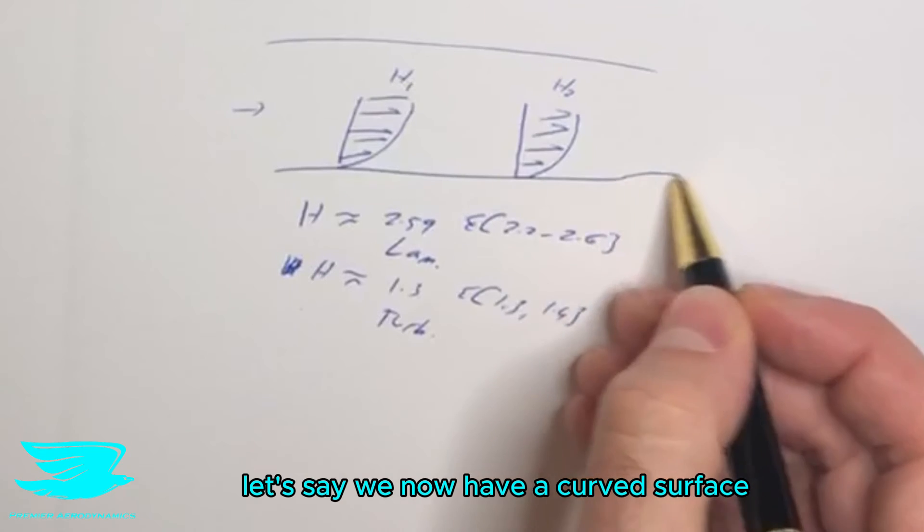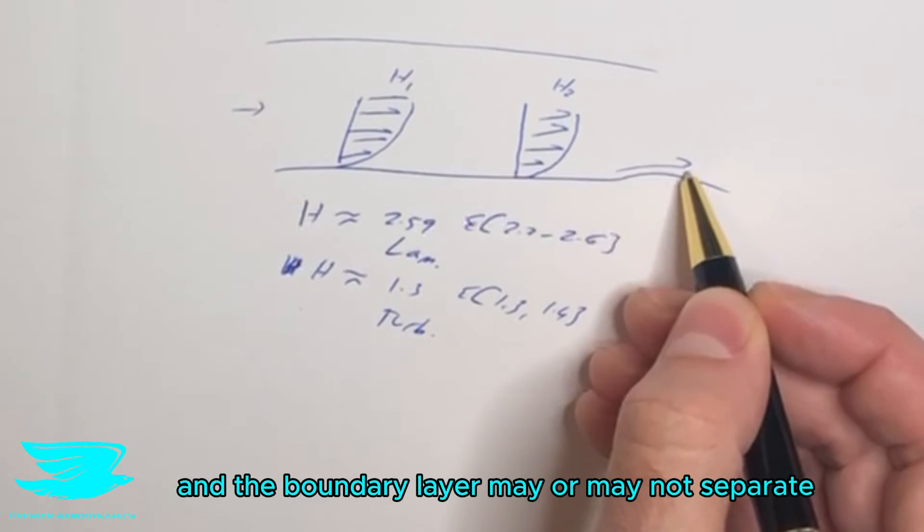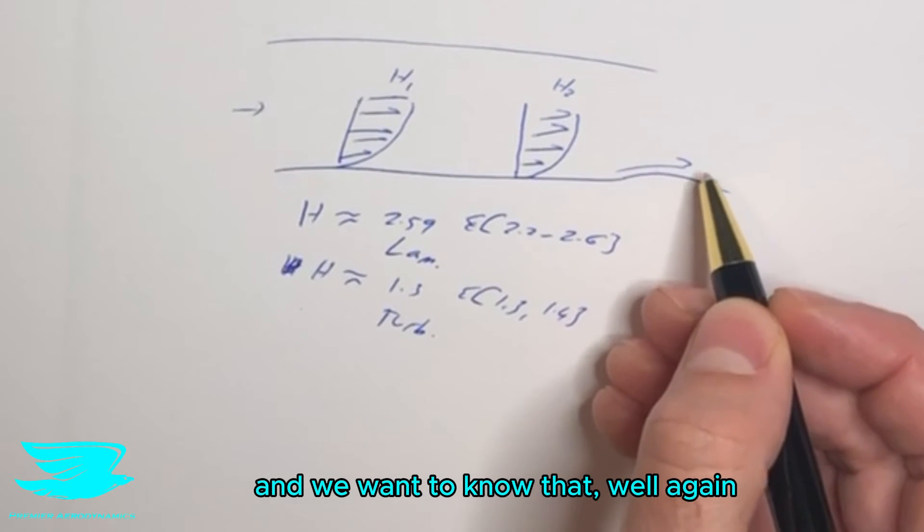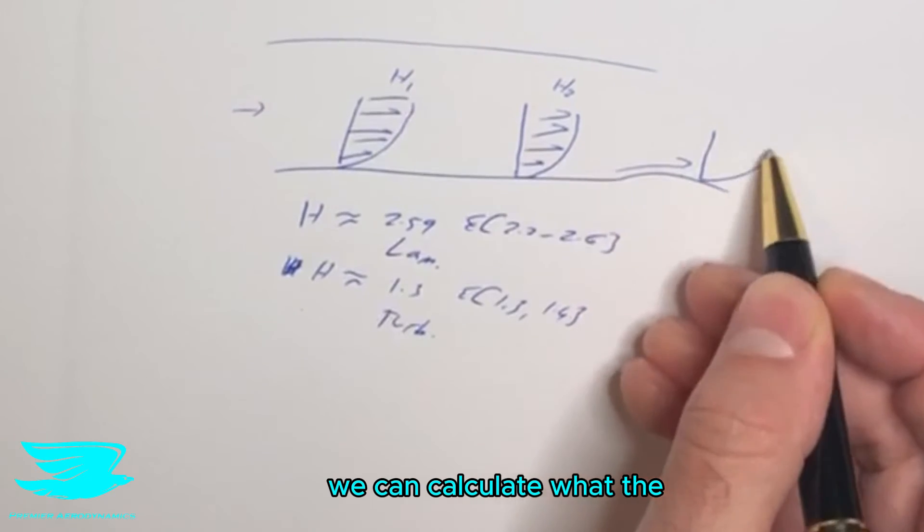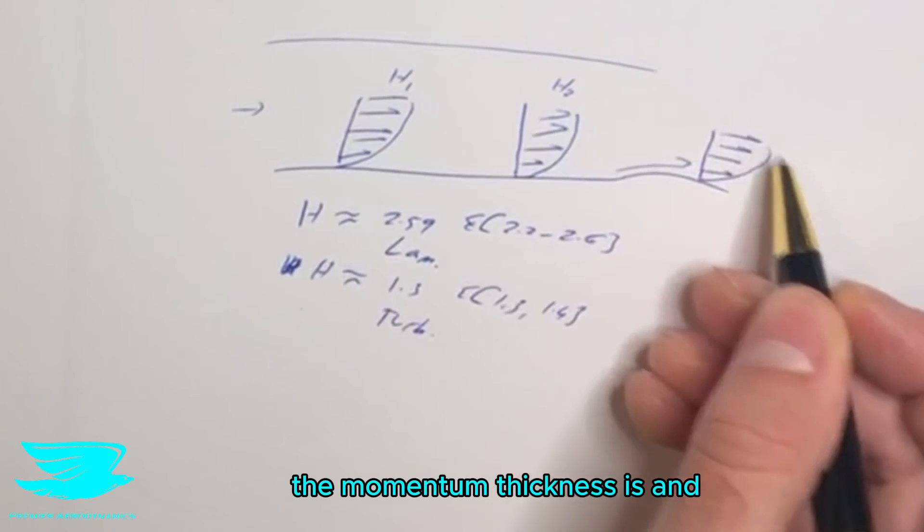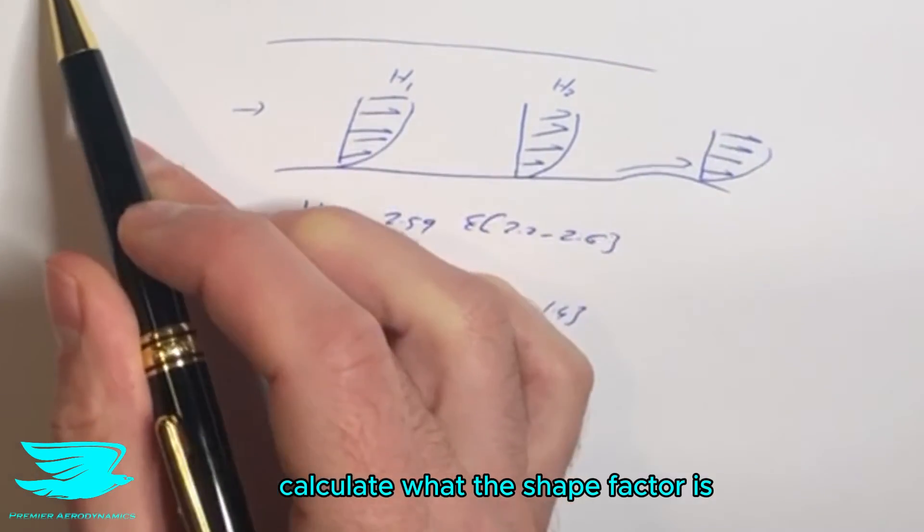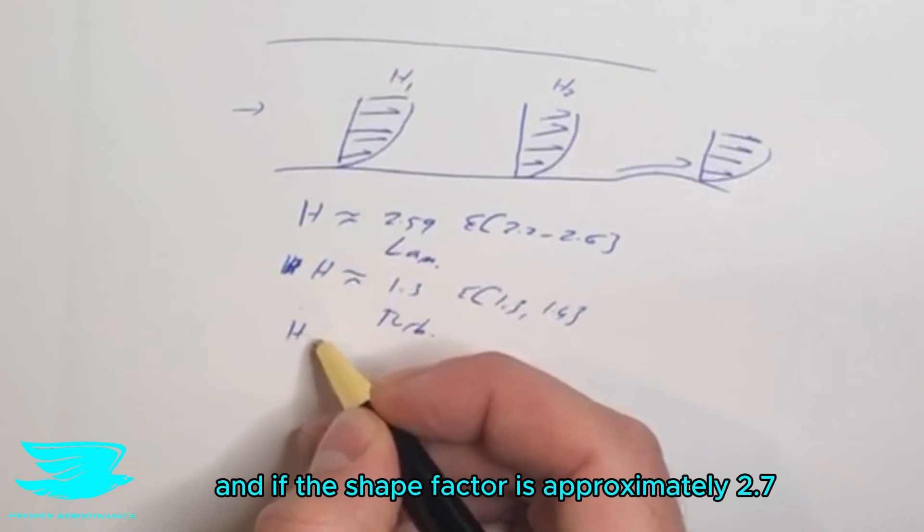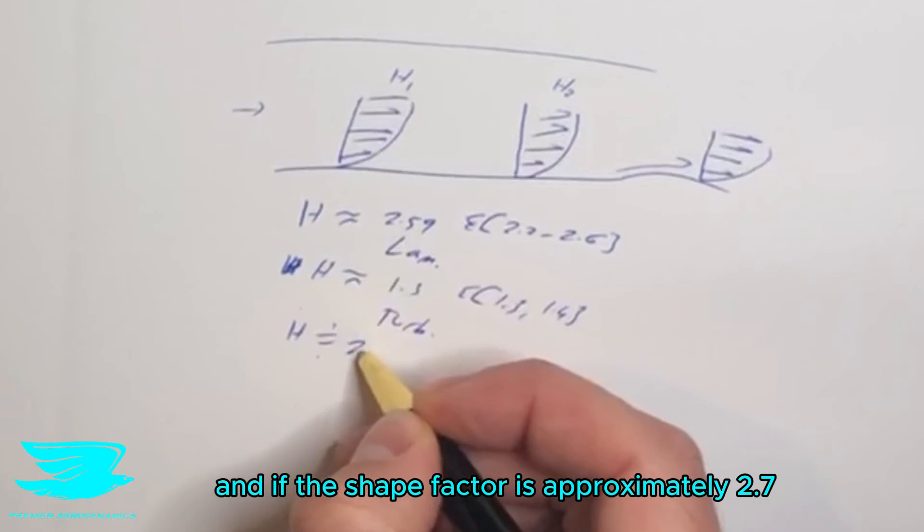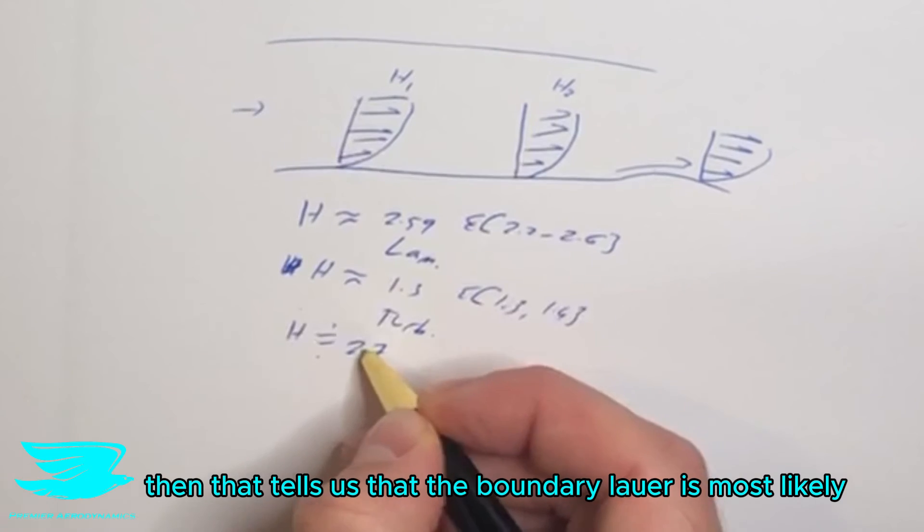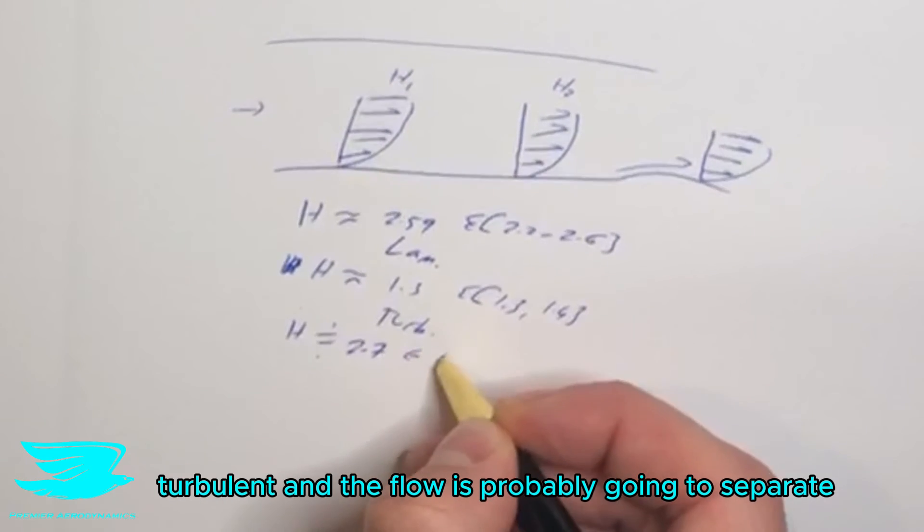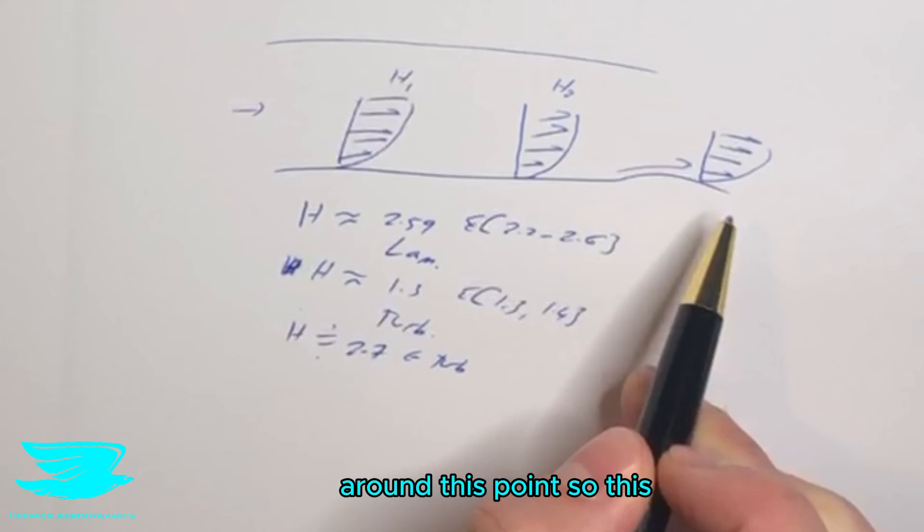But, let's say we now have a curved surface, and the flow is going over it, and the boundary layer may or may not separate, and we want to know that. Well, again, we can calculate what the momentum thickness is and the displacement thickness, calculate what the shape factor is. And if the shape factor is approximately 2.7, then that tells us that the boundary layer is most likely turbulent, and the flow is probably going to separate around this point.